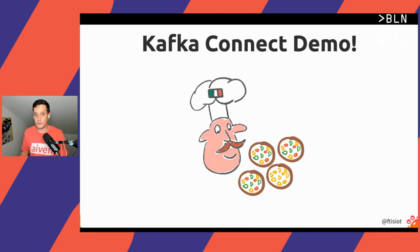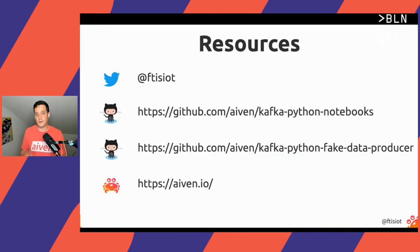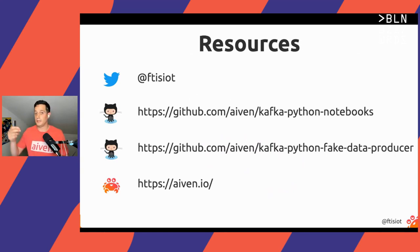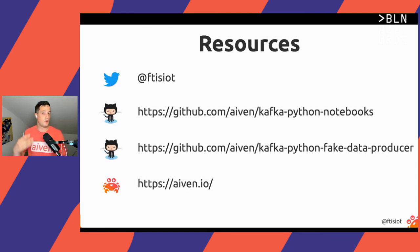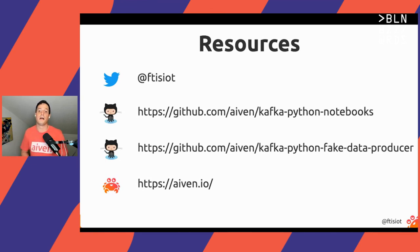If you want more resources, here is my Twitter handle — you can reach out to me if you have any questions regarding Kafka, Python, or pizza choices. The first link is a GitHub repository containing the notebooks I've been showing today, so you'll be able to create the resources automatically in Aiven and start playing with Kafka. If you want to try Kafka but don't have a streaming dataset, I also created a fake pizza orders producer that will start producing fake pizza orders in streaming mode.